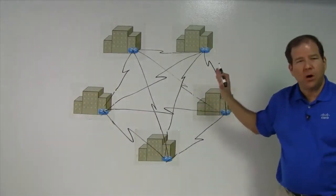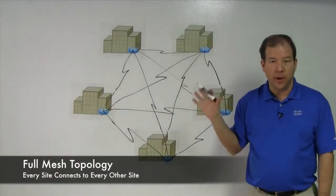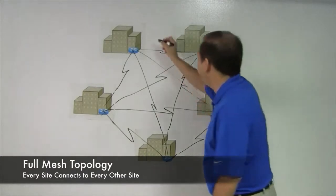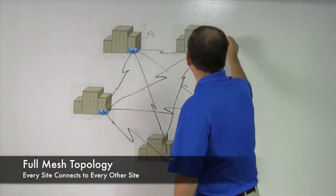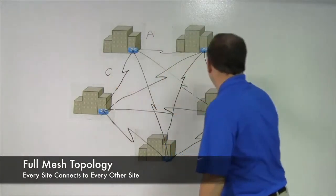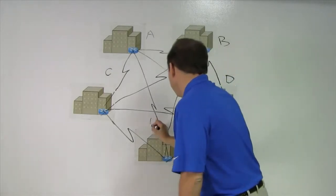This is called a full mesh topology. Let's label these sites. We've got A, B, C, D, and E.